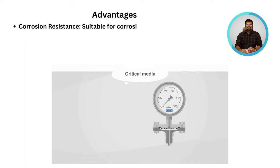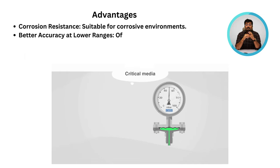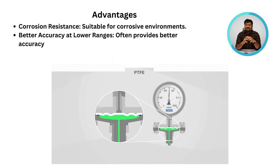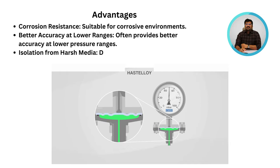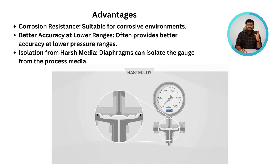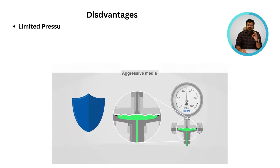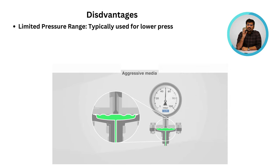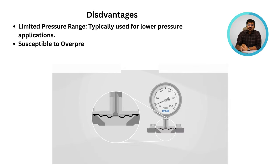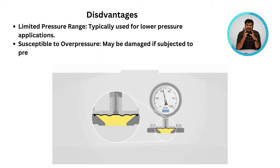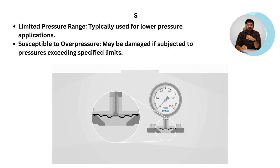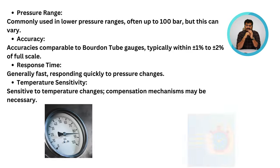Main advantages are: suitable for corrosive environments, better accuracy at lower pressure ranges, and the diaphragm can isolate the gauge from the process media. Main disadvantages are: typically used for lower pressure applications only, and it can be damaged by pressure ranges exceeding the specified limits.